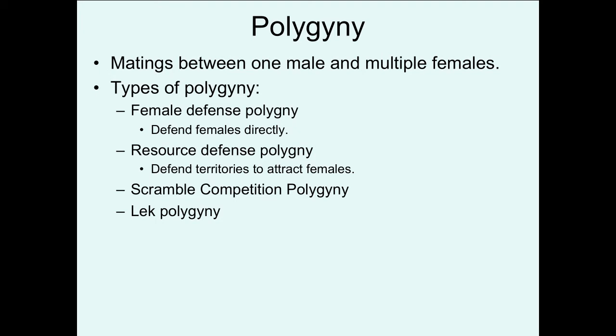We'll also talk about scramble competition polygyny and lek polygyny, which are considered by many as types of polygyny, but in other cases considered promiscuity. Promiscuity differs from previous mating systems in that those were all defined with regard to the number of individuals in pair bonds, with regular associations for the length of a breeding season. In scramble competition and lek polygyny, individuals come together and mate but then have nothing else to do with each other — there are no long-term pair bonds.